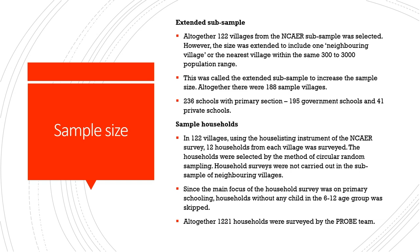Regarding the sample households: in the 122 NCAER villages, the PROBE team used the house listing instrument — basically the list of households in each village used by survey agencies for detailed surveys. This instrument contains detailed or brief information about households, helping surveyors carry out further sampling. From each of the 122 villages, 12 households were surveyed, selected by circular random sampling — where every third or fifth household is selected to ensure the sample is representative of the entire population.